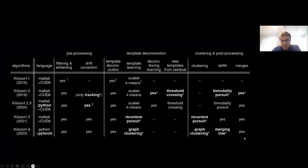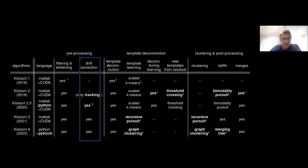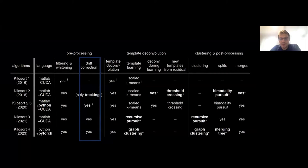If you follow this progression, you'll see there are some features that have been there from the beginning — steps of the pipeline that have proven absolutely crucial and stayed. And then there are things we've been messing with, hoping to improve. We're going to start with drift correction today. We're going to skip filtering and whitening — you've already heard about that. Drift correction is maybe the single most important thing you can change in your spike sorting and even your actual experimental setup to improve the quality of your recordings.